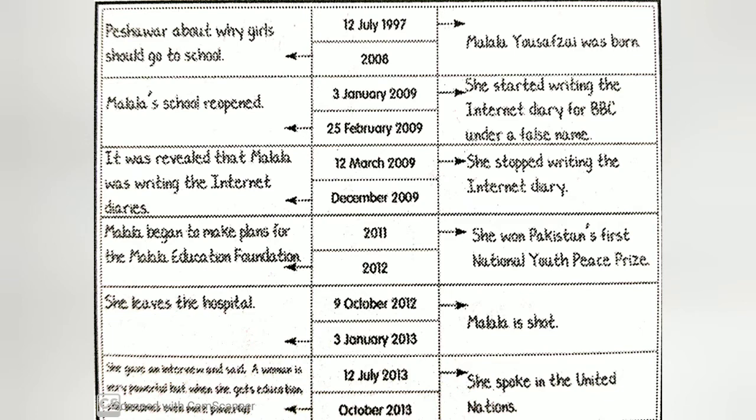On is used before a day or date. In is used before a year or month. At is used before a specific time.